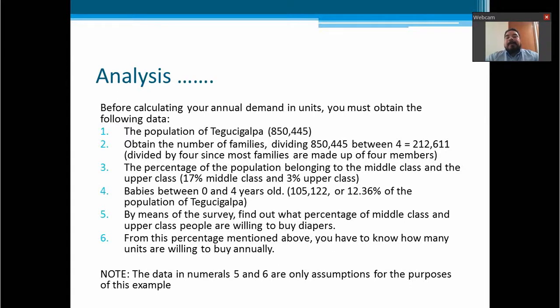So investigating this information, we have that Tegucigalpa has 850,445 people. The number of families is calculated dividing this population by four. So we have 212,611 families, since most of the families are made up of four members. The percentage of the population belonging to the middle class and the upper class is 17% for the middle class and 3% for the upper class.